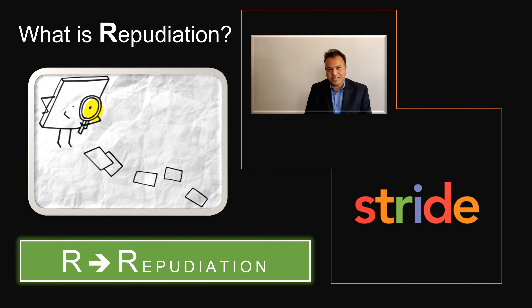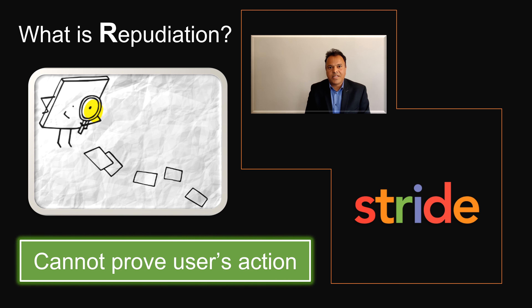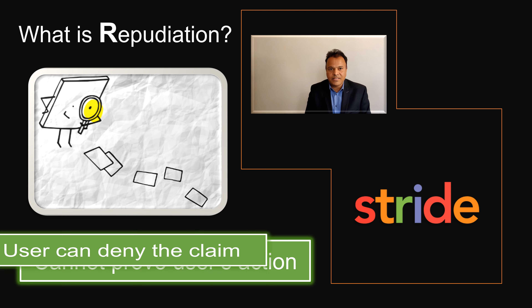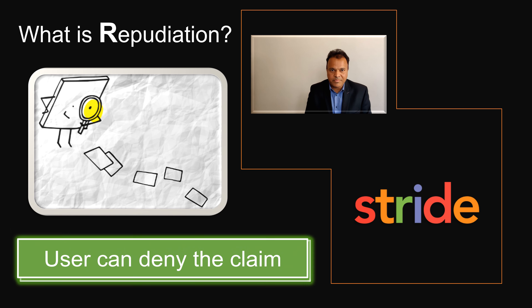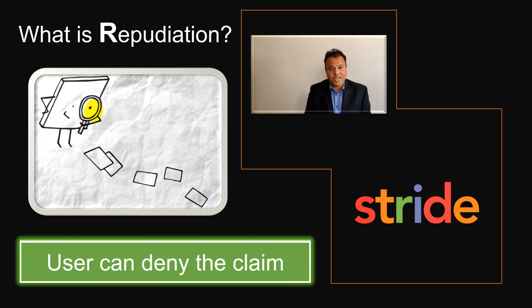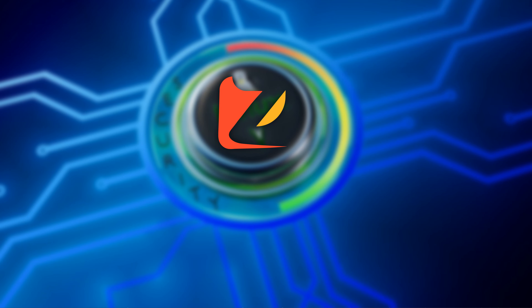The next letter R stands for Repudiation — sometimes called non-repudiation. It is a situation where there is no evidence that an action has occurred, or a user can deny a claim saying they did not do it. This can happen quite a bit, especially in terms of hacking websites.